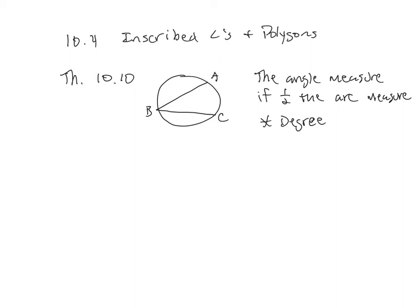So if arc AC was 100 degrees, then the inscribed angle would be 50 degrees. You can go back and forth: if you know the angle, multiply by two to get the arc; if you know the arc, the angle is half.